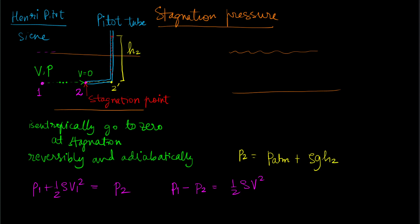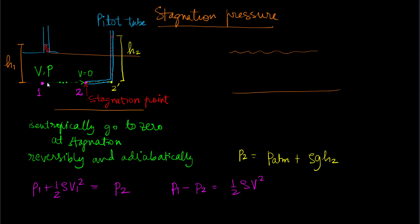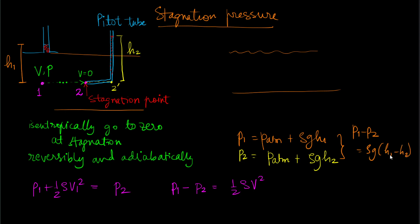Based on the previous discussion, we can find the static pressure at point one using a static tap. The liquid in the static tap stands at a certain height h1, so p1 equals p_atmosphere plus rho g h1. Using this, we can write p2 minus p1 equals rho g times (h2 minus h1).